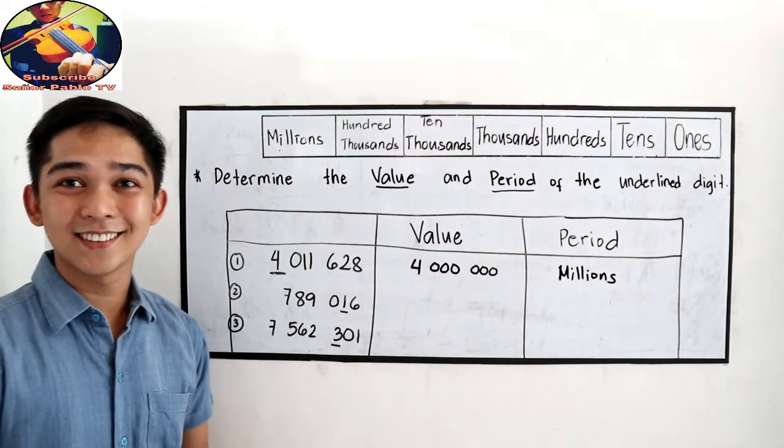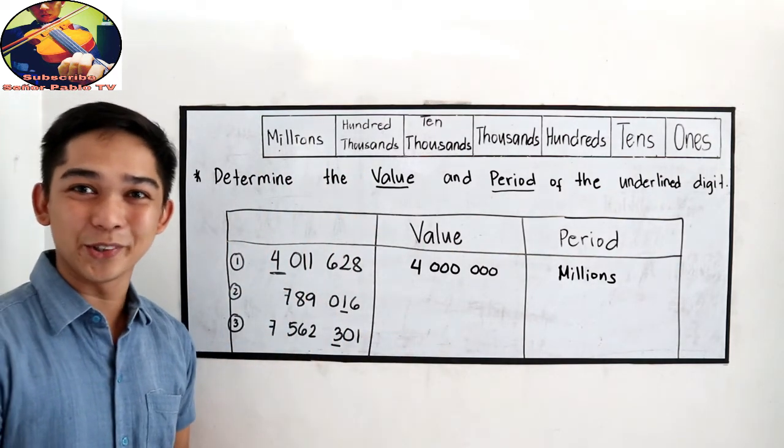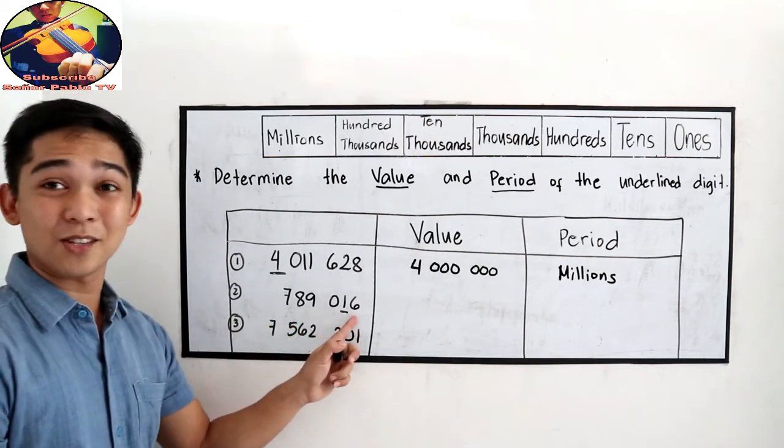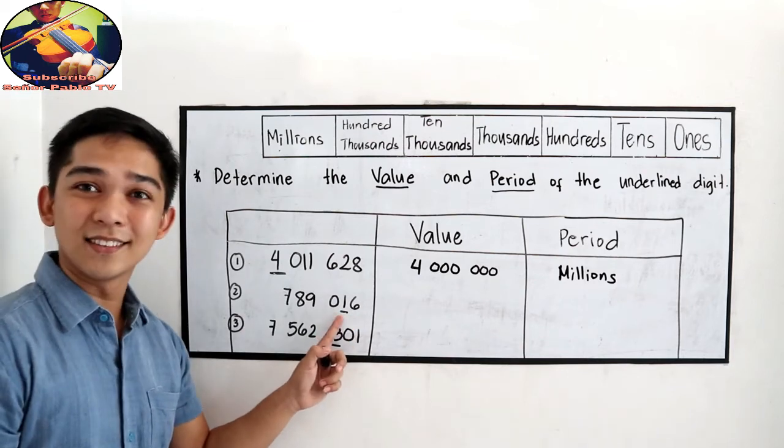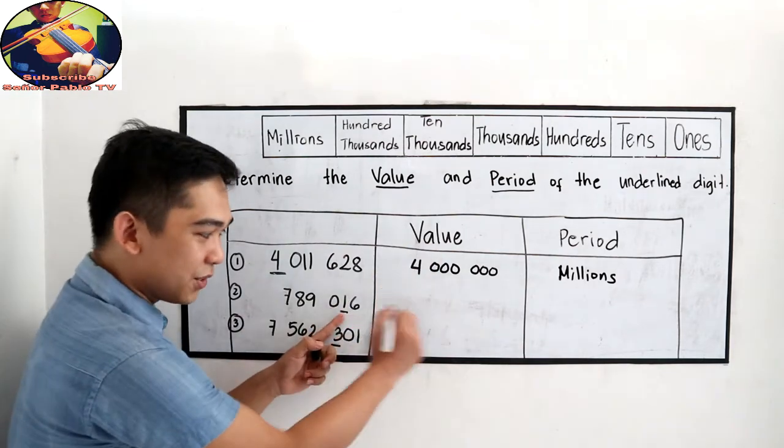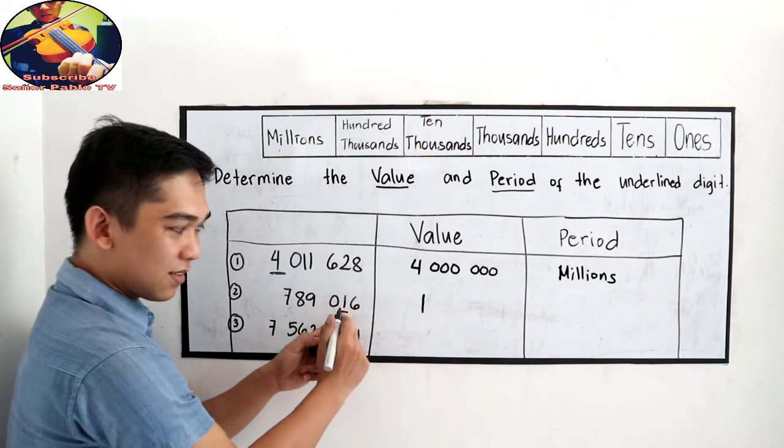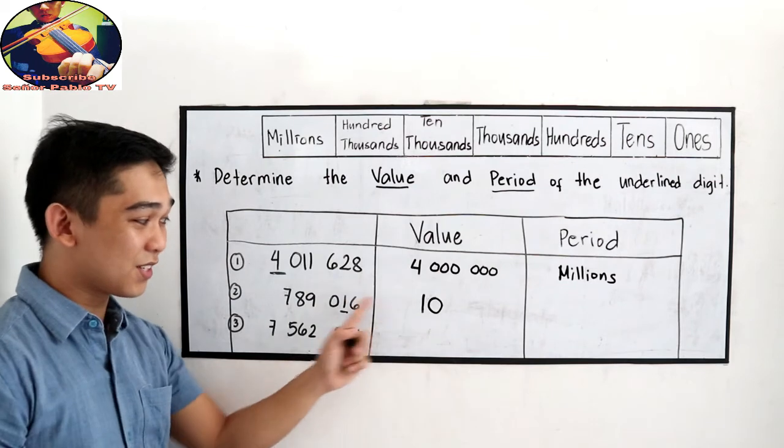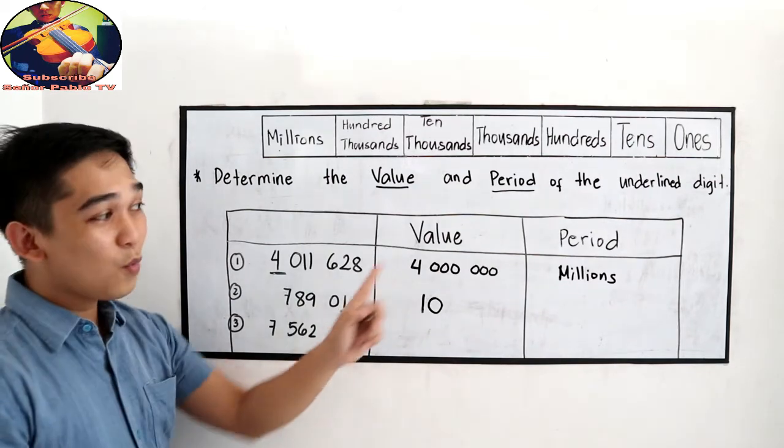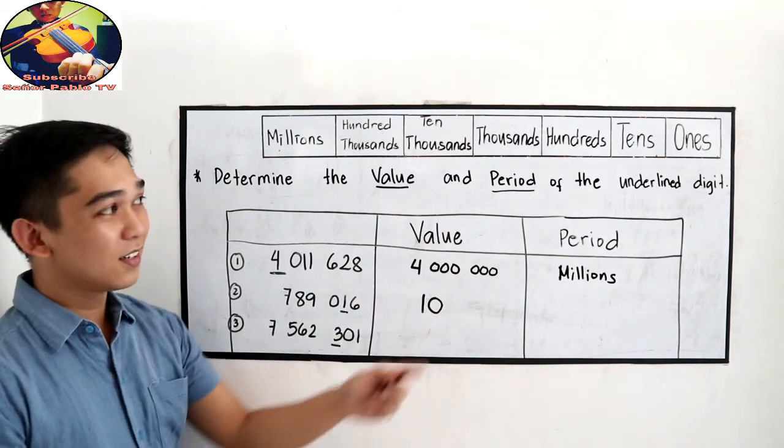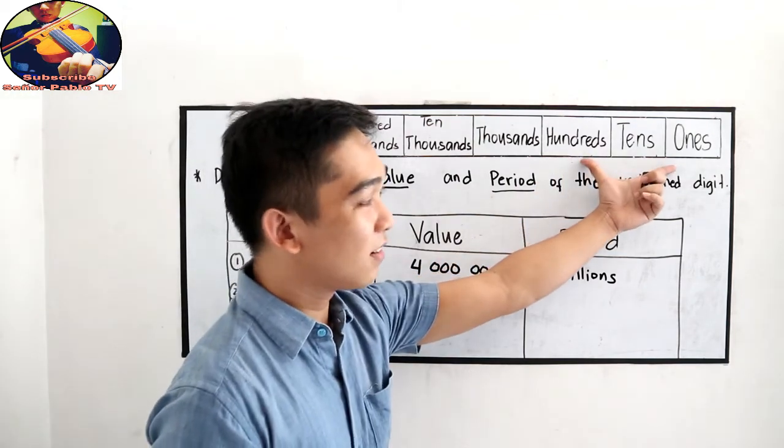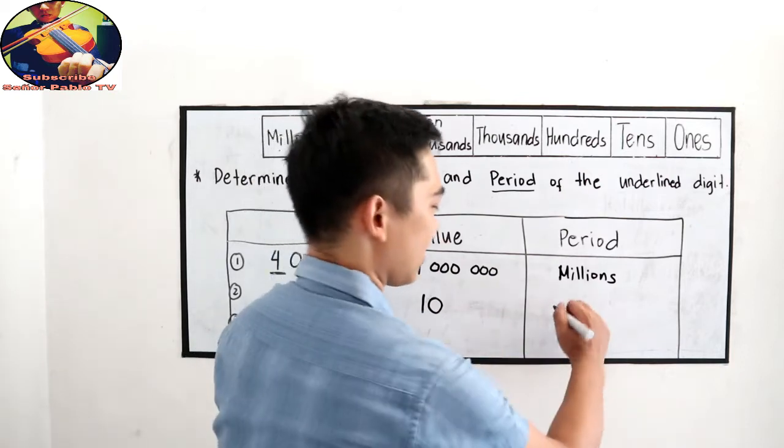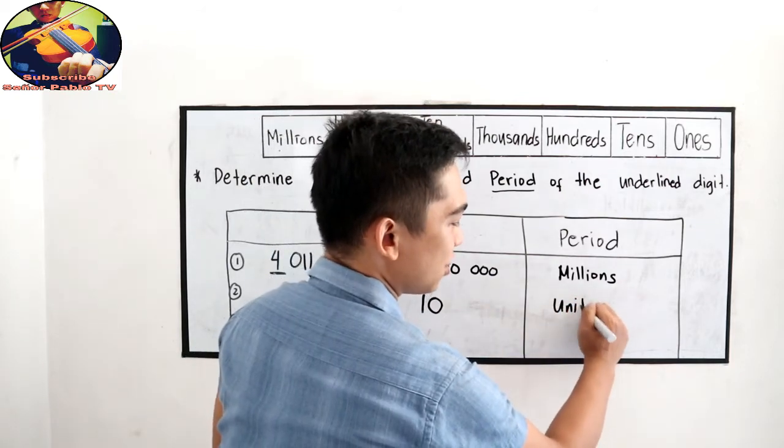Did you get it? Now, let's try number 2. 789,016. The underlined digit is 1. So for the value, copy 1. Then change to 0. Okay. So the value is 10. Now, what is the period? So first 3, in our place value, the period is units. So period, units.